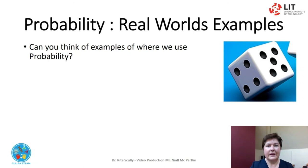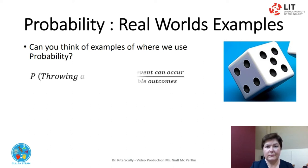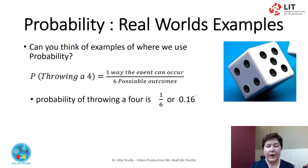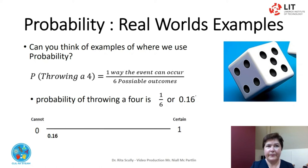If we consider a six-sided dice, each number has an equal chance of appearing when the dice is thrown. If we consider the probability of throwing a 4: the event is throwing a 4, there is one way that event can occur, but there are six possible outcomes. The probability of throwing a 4 is 1 over 6, or 0.16. This can be shown on the probability line.